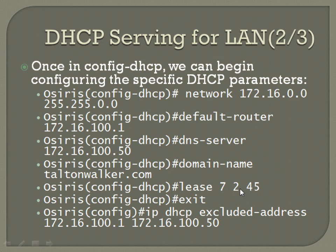Once you've got all that done you can exit. It'll jump you out of DHCP configuration mode and you can define any excluded addresses from your DHCP range. The command structure is 'ip dhcp excluded-address' followed by the IP addresses. In this case there's a range set up from .1 through .50. At the very least you want to exclude the gateway — the router's interface IP — so it doesn't try to pull that address, in this case .1.